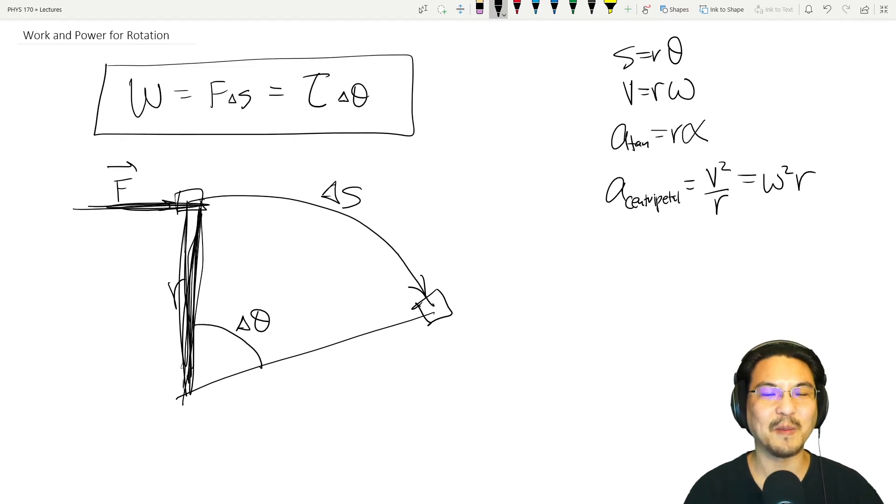So if you're pushing something in a straight line, work kind of looks like this. If, let's say there's a cylinder and you turn it with some torque, the work is that torque you applied and the angular displacement.